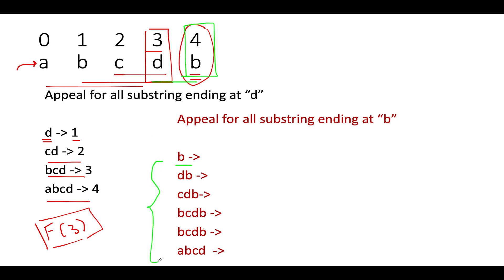Here I have listed those up and let's try and calculate the appeal for each one of them. This is pretty straightforward: it would be equal to one. Then this one would be equal to two because there are two distinct characters, and I can represent this as one from here plus one. Let's proceed ahead.